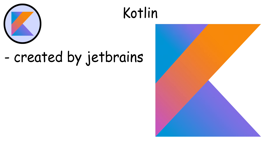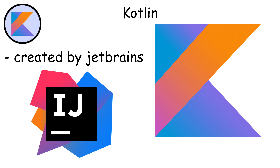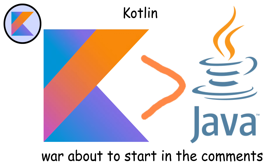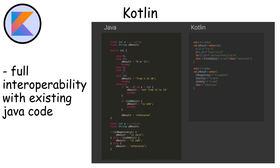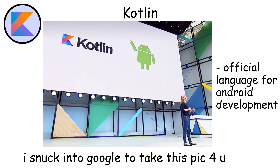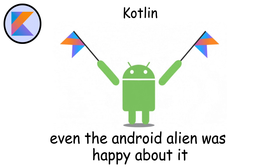Kotlin was created by JetBrains, the company behind IntelliJ IDEA, and was first released in 2011. It was designed as a better alternative to Java while maintaining full interoperability with existing Java code. In 2017, Google announced Kotlin as an official language for Android development, and in 2019, they declared it the preferred language for Android.